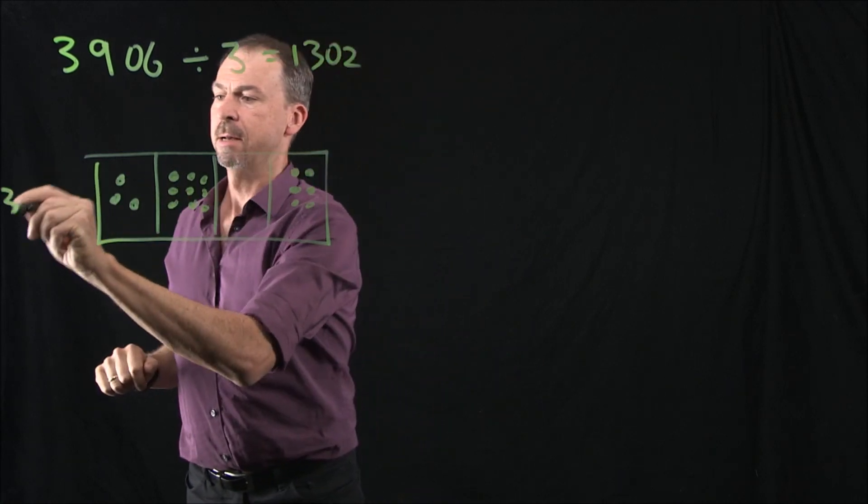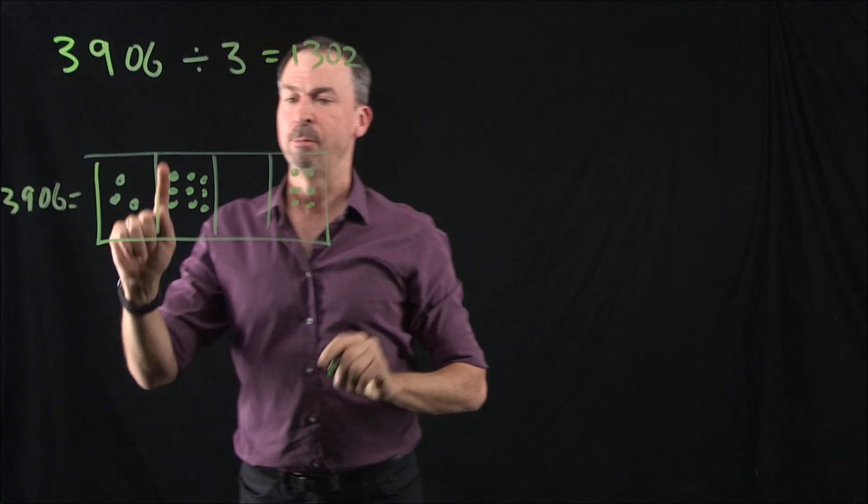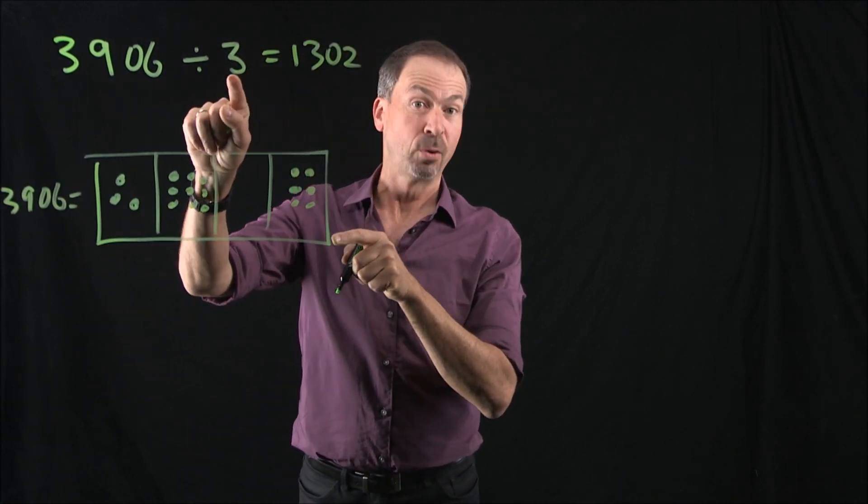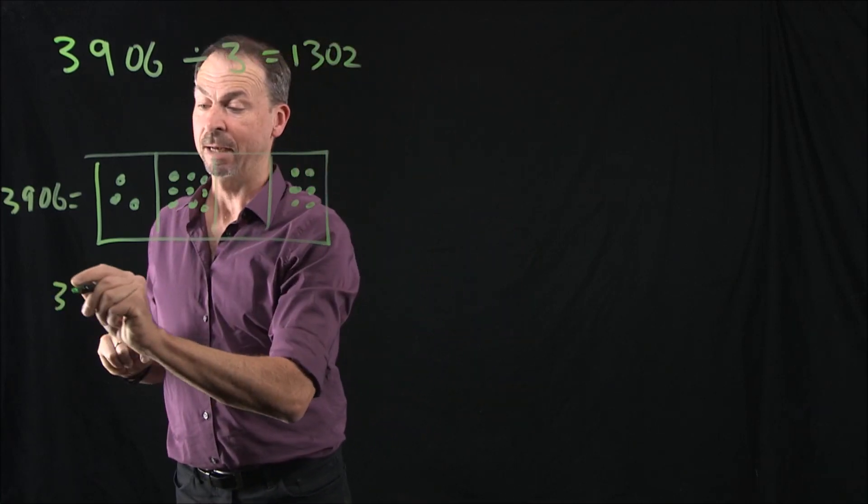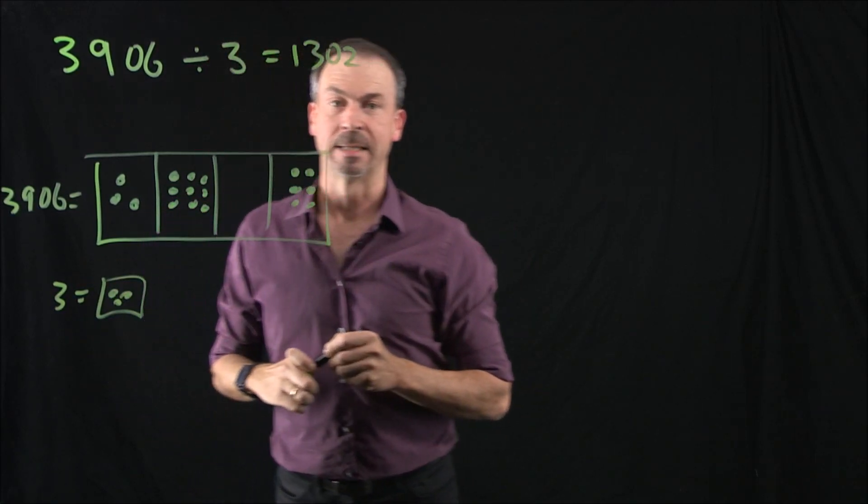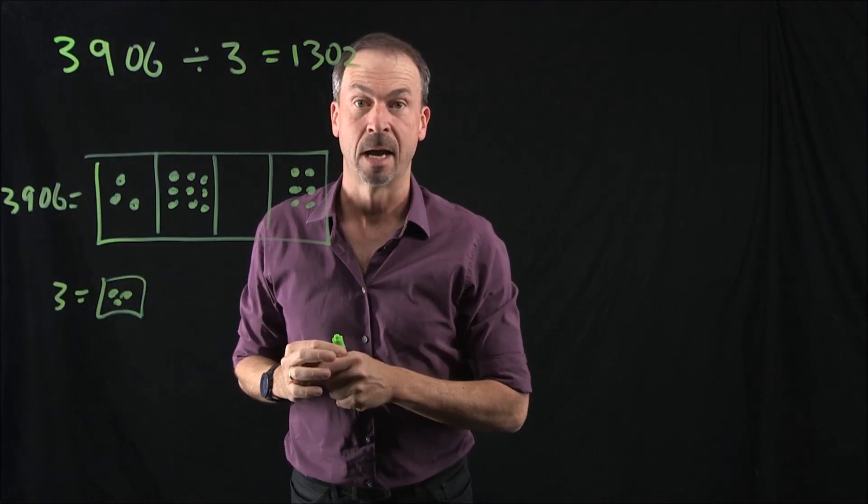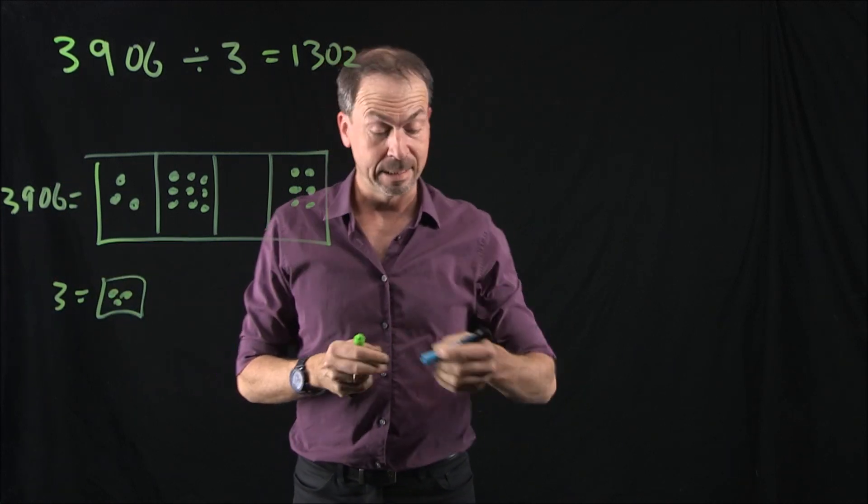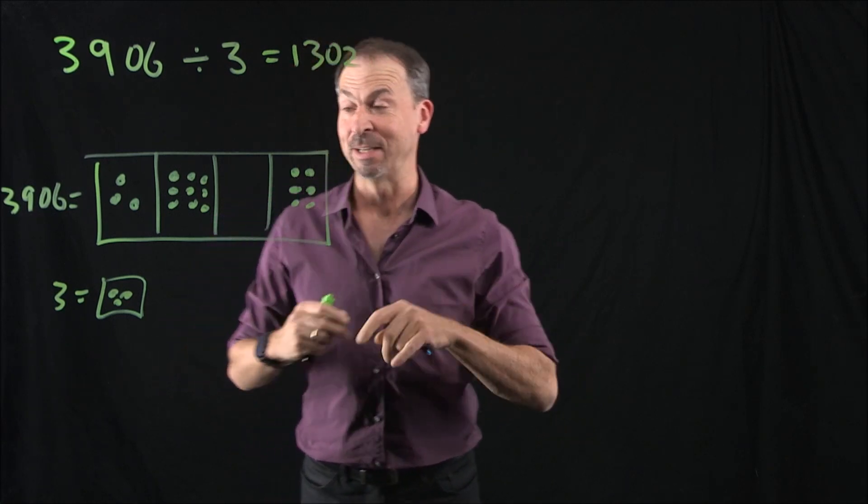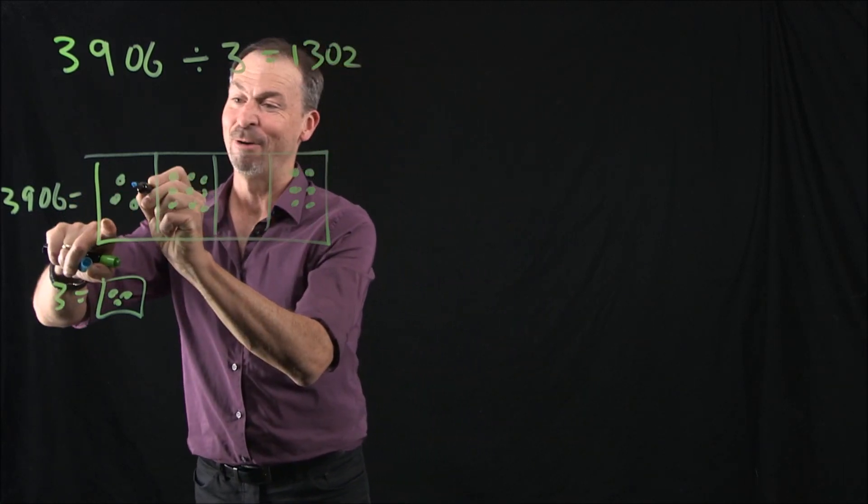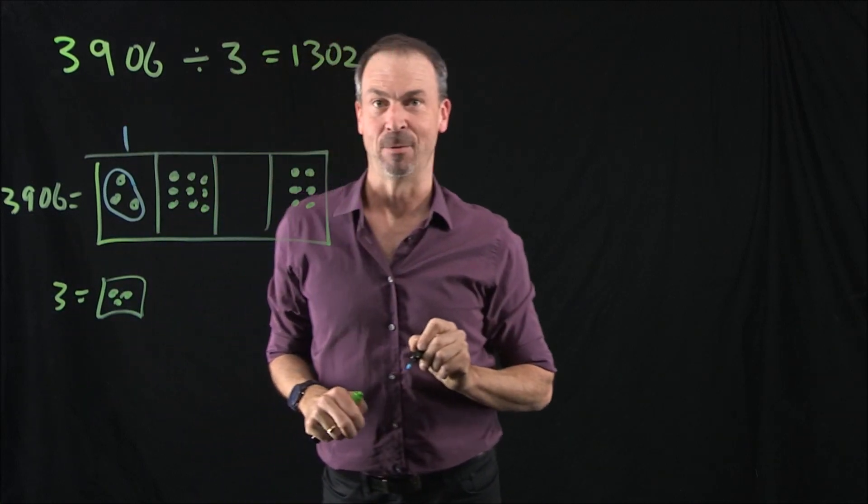There's a picture of 3,906, and I'm looking for in that picture groups of three. And what does three look like? Well, obviously it looks like three dots. So the question is, can I see any groups of three in this picture of 3,906? And the answer is yes. I can see lots of groups of three. For example, I see one group of three right here at this 1,000 level.